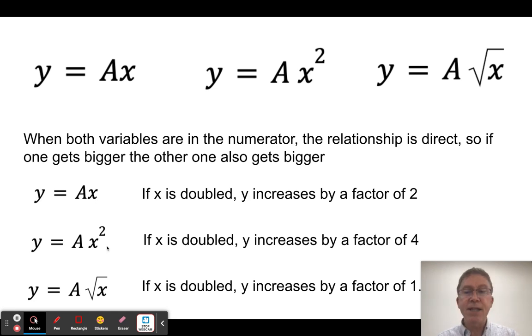On the other hand, in this case, they're both in the numerator, so it's definitely a direct relationship. In this case, what's going to happen is if I double x, then y goes up by a factor of four. And in this case, if I double x, y goes up by a factor of 1.4 or square root two. But in all cases, it's going to go up if one goes up.